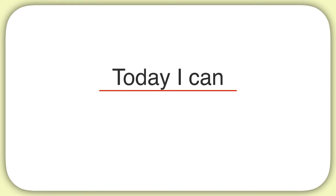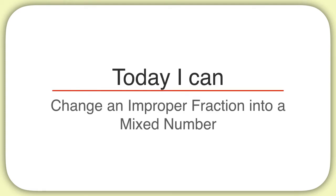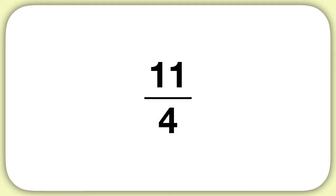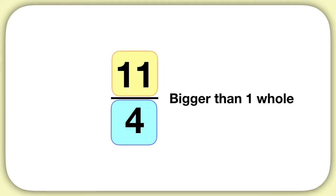Today we are learning how to change an improper fraction into a mixed number. An improper fraction looks like this, where the numerator is larger than the denominator. It means my fraction is bigger than one whole.